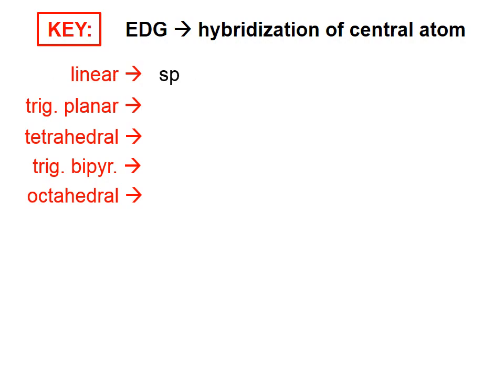If the electron domain geometry is linear, the hybridization state is SP hybridized. If it's trigonal planar, it's SP2 hybridized. If it's tetrahedral, it's SP3. Trigonal bipyramidal is SP3D, which I said on the previous slide, they're not going to ask you about in AP chemistry, but I'm just following the pattern. And octahedral, SP3D2.